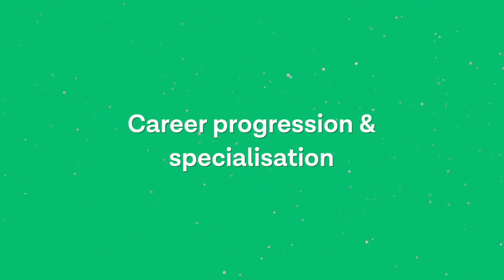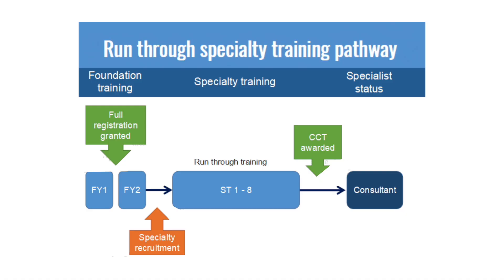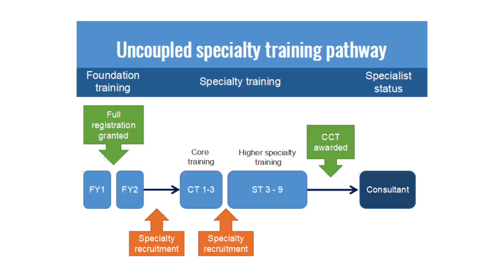Now let's look at career progression and specialisation. After two years of foundation training, a doctor can choose to specialise. Specialty training is offered in two ways: run-through training, which involves a single recruitment covering the entire curriculum up to consultancy — for example, cardiothoracic surgery — and uncoupled training, which involves core training followed by higher specialised training, seen for example in acute internal medicine. Different specialties vary in how competitive they are; the most competitive tend to be surgery, especially neurosurgery, and the least is general practice, although this is changing.